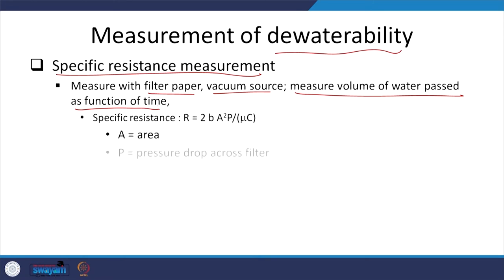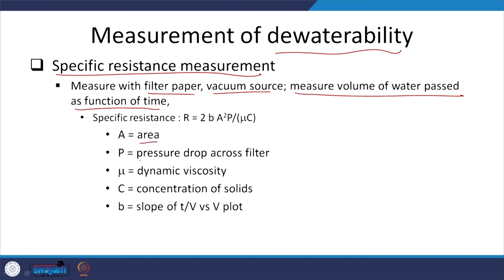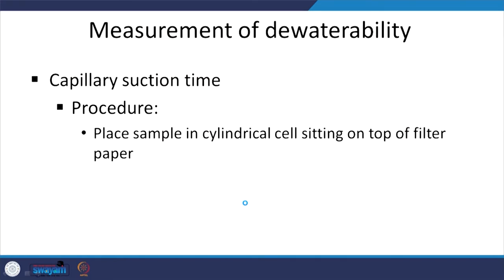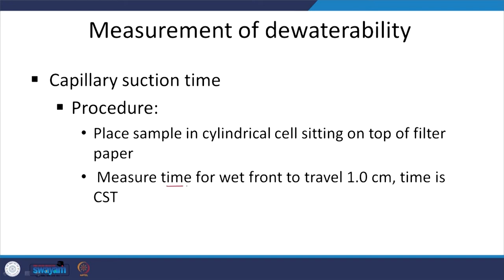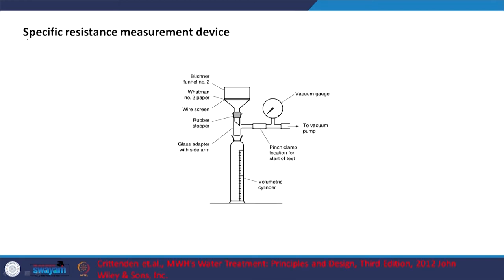The formula for specific resistance is relatively straightforward: it involves area, pressure drop across the filter, area of the filter, dynamic viscosity, and concentration of solids — you can see the relevant interrelationship there. For capillary suction time as a measurement of dewaterability, we place the sample in a cylindrical cell on top of a filter and measure the time for the wet front to travel 1 centimeter — that time is the capillary suction time.